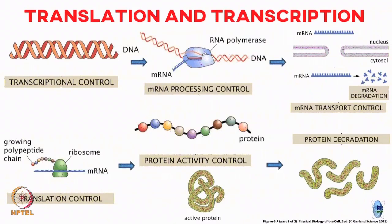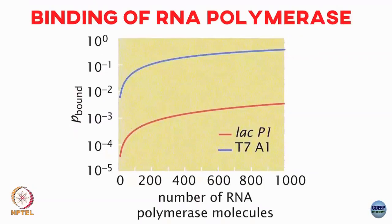This is the whole transcription and translation process. We are just interested in the RNA polymerase part, and again you can calculate p_bound as a function — we calculated the entropy.